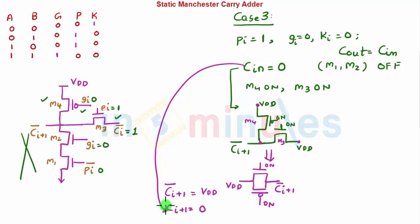The last case is the most interesting. Let's quickly do that as well. When cin equals 1, CI bar equals 0. Again, M3 and M4 are ON; the other two are OFF because those conditions are not changing. We will draw this circuit. This is ON, this PMOS is also ON. This is VDD, this is ground, and this is my CI+1 bar.